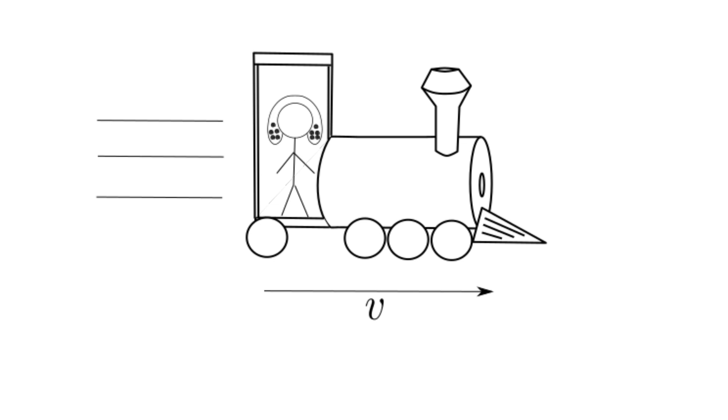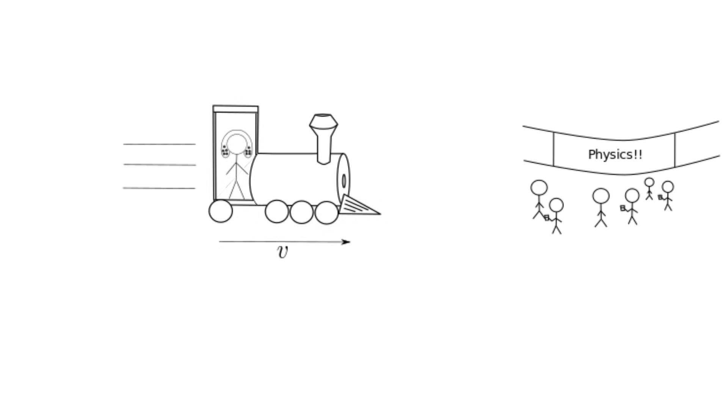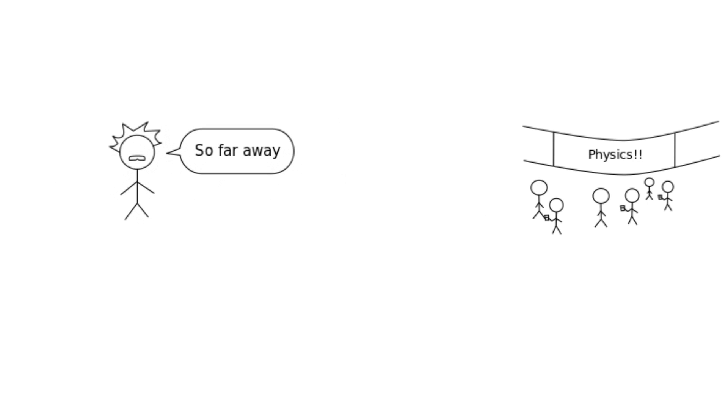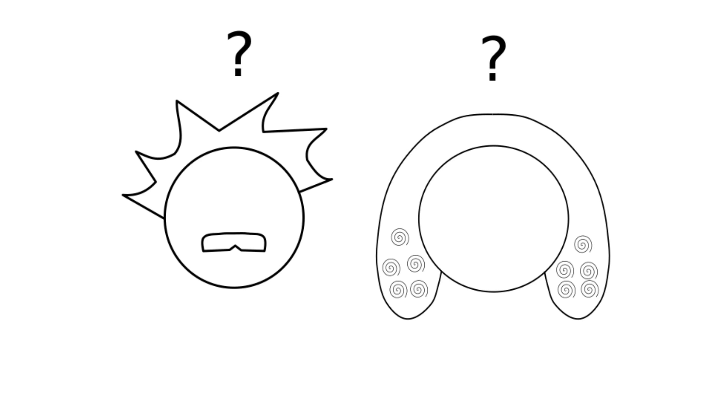Say the train is traveling at some velocity v relative to the train station. According to Isaac, the conference is getting nearer and nearer the longer he is on the train, while for poor Albert, the conference is staying the same distance away. The universe obviously isn't changing, but the two people experience very different realities. How can this be?